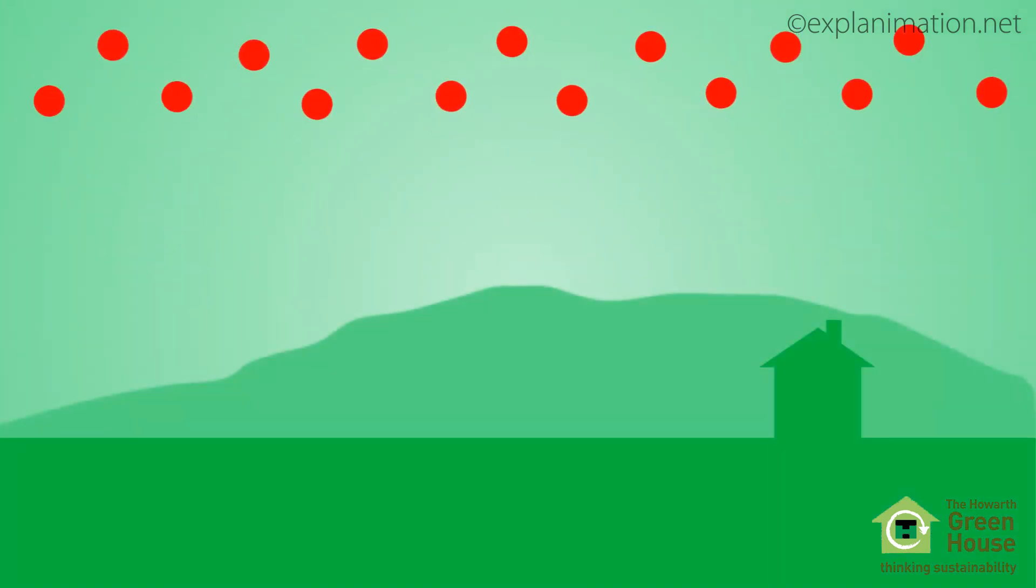Let's look at a biomass alternative, in this case, wood. A tree grows, absorbing several years' worth of CO2 from the atmosphere.